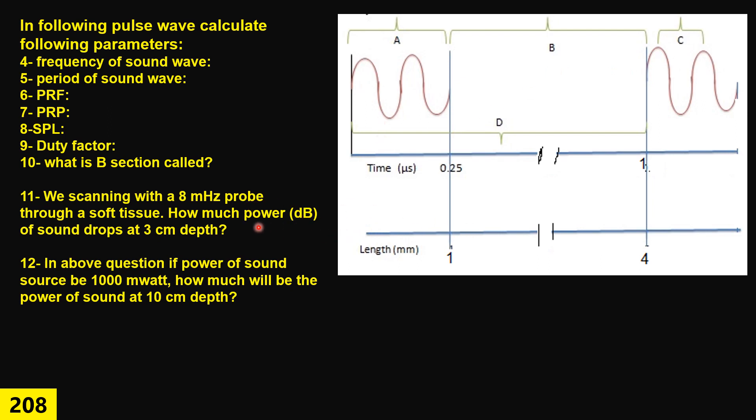Question 11. We scan soft tissue with an 8 MHz probe. How much power of the sound based on decibels dropped at the depth of 3 cm? If we measure the energy and power of the sound at the depth of 3 cm, how much did it drop? Question 12. In the same question, if our sound energy at the beginning of the sound probe was 1000 milliwatts, how much will it be at the depth of 10 cm? That is the concept of attenuation. You have to know all this stuff because it helps you a lot with optimizing images and everything.